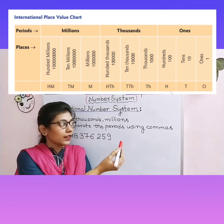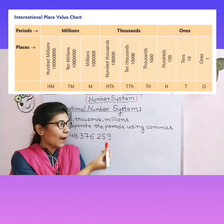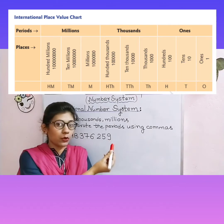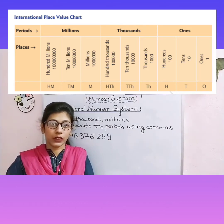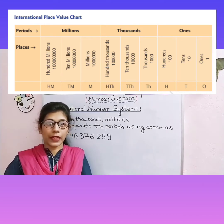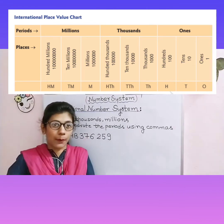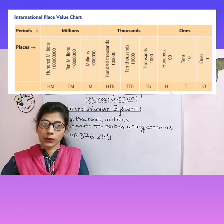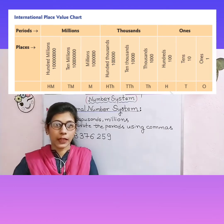We show hundreds as 'H', thousands as capital 'TH', and millions as 'M'. Now draw the International Place Value Chart as classwork in your homework copy. You can bend your copy horizontal to have more space, and then draw the chart properly with a scale.